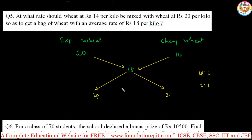The ratio is 4 : 2 = 2 : 1, meaning expensive wheat to cheaper wheat is 2 : 1. So for every 2 kilos of expensive wheat at 20 rupees, add 1 kilo of cheaper wheat at 14 rupees to get an average of 18 rupees per kilo. The final answer is a ratio of 2 : 1.